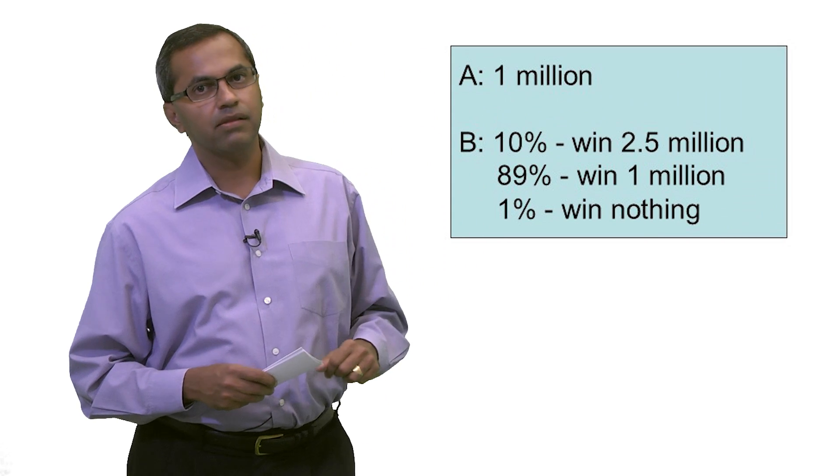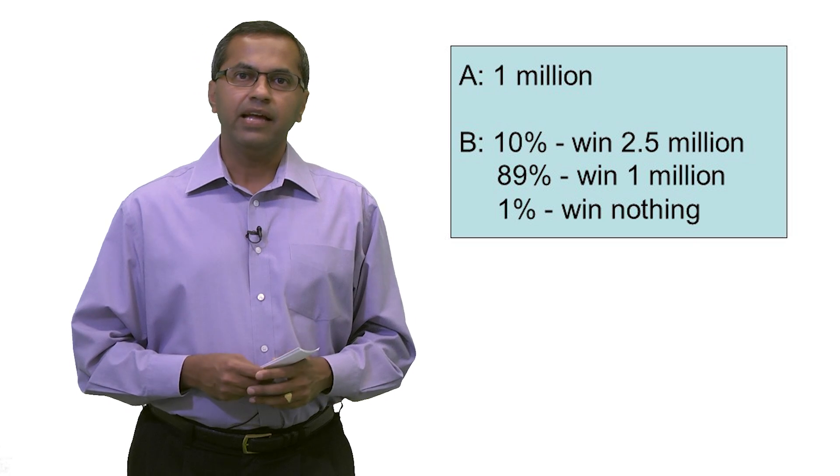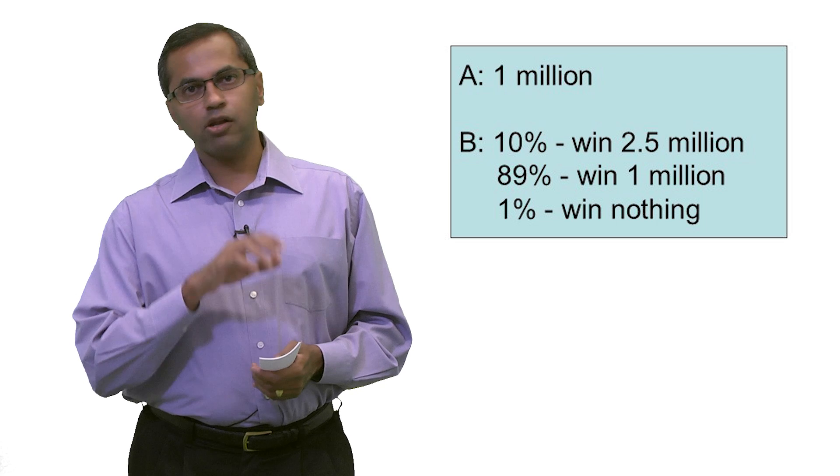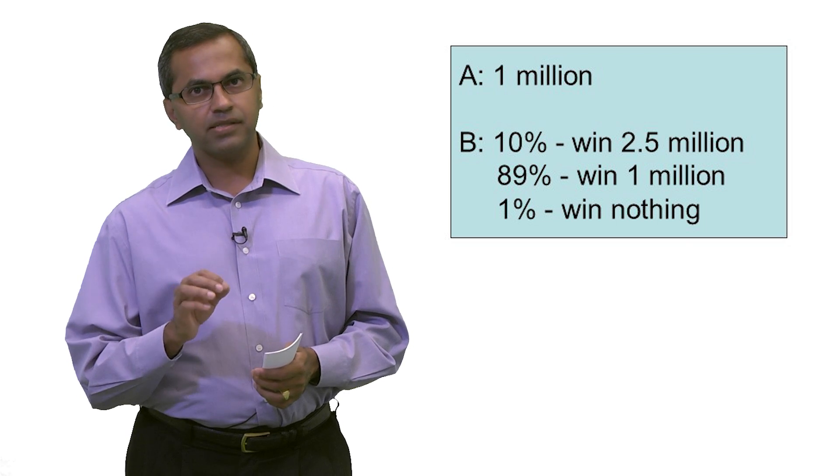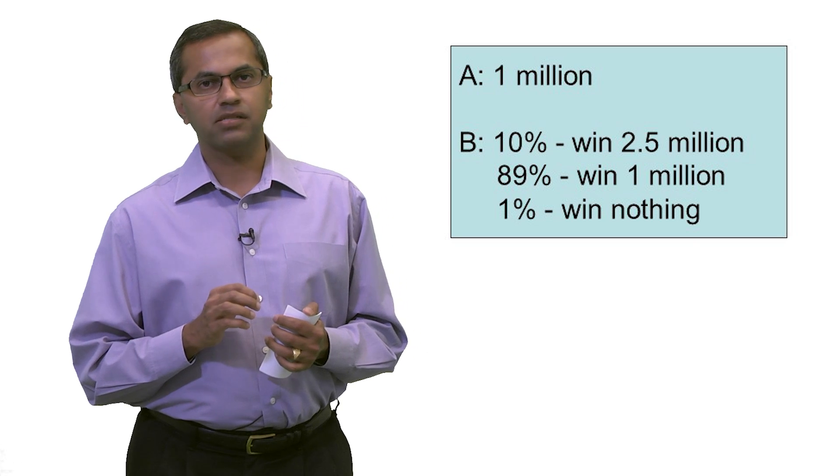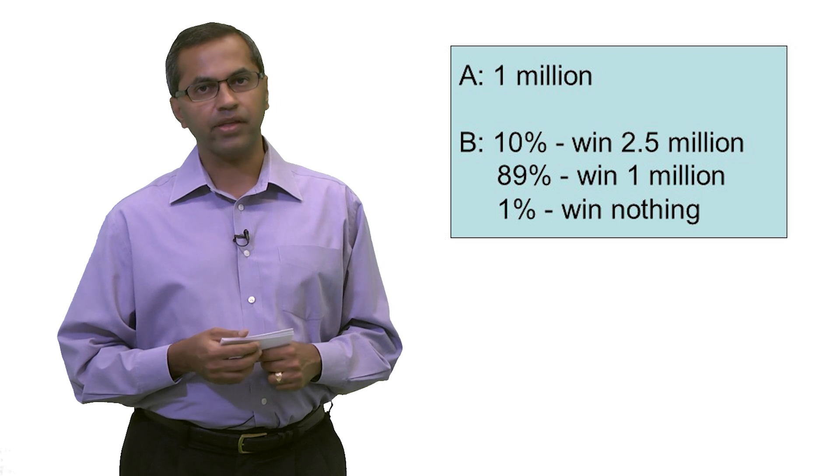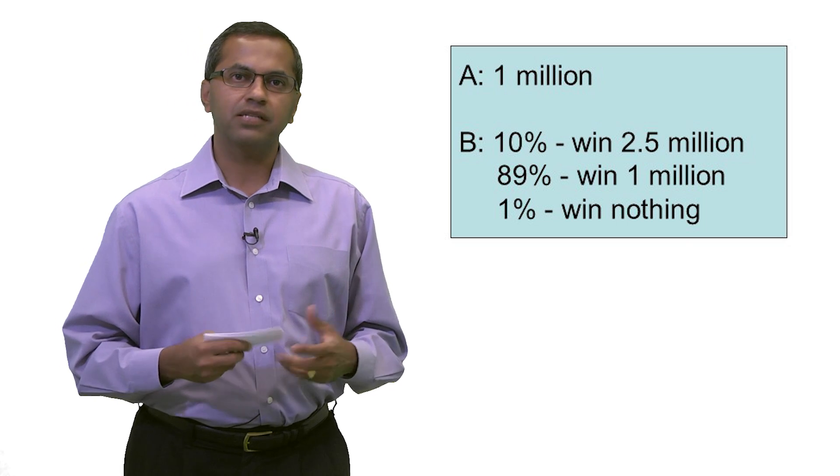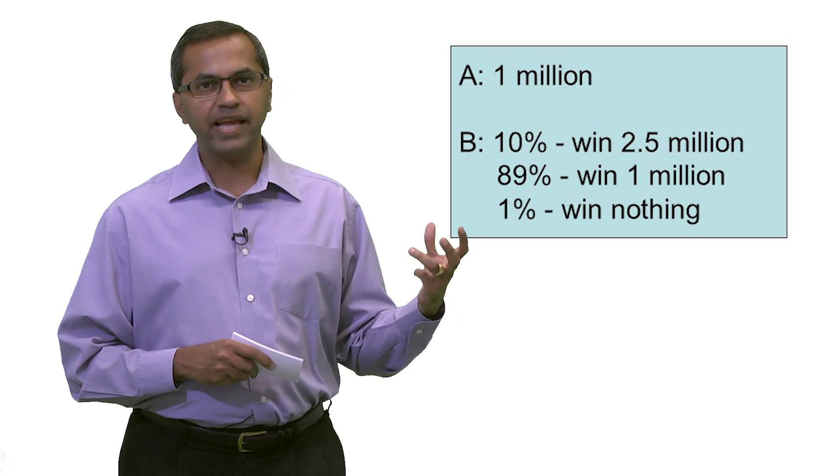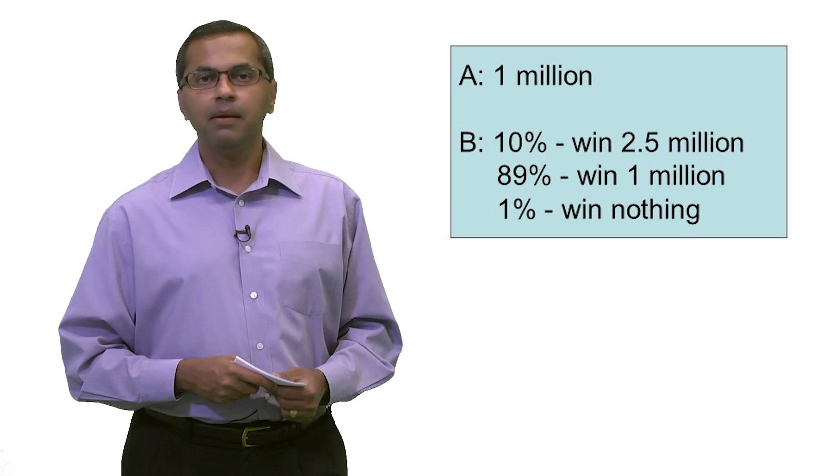Let's look for a moment at this particular choice. You've got two options. Option A, I give you a million dollars, no questions asked. Option B, they're going to play a lottery. In that lottery, there's a 10% chance that you will win 2.5 million. There's an 89% chance that you will win 1 million. And there is a 1% chance that you will win nothing. Now, in this circumstance, what Maurice Allais found was that most people prefer option A. It's a no-brainer. It's a million dollars with no strings attached. Makes perfect sense.